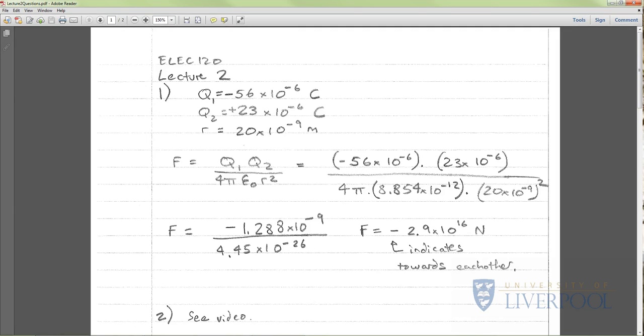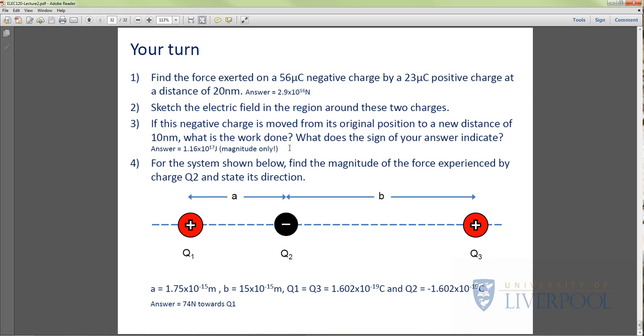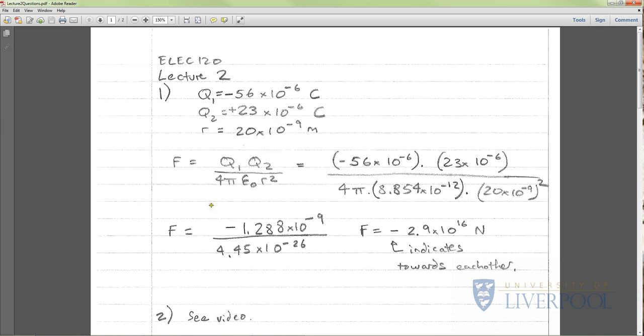Welcome to Lecture 1.2. This is going to be answering the questions that I posed for you in Lecture 2 at the end of the lecture. I have this slide called Your Turn. Question one asks you to find the force exerted on a 56 microcoulomb negative charge by a 23 microcoulomb positive charge at a distance of 20 nanometers. I gave you the answer, but I'm going to go through what you actually need to do.